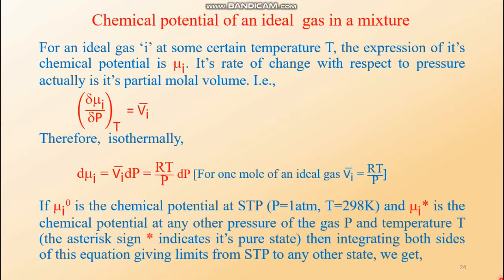Let's start with the expression of chemical potential of a gas at some temperature T and some pressure P, where pressure is variable and temperature is constant. The component is named i, the ith component of the gas. When it is not mixed up with other gases — that means when it is in a pure state — it has a particular chemical potential expressed as mu i. For an ideal gas i at temperature T, its rate of change with respect to pressure is its partial molar volume: del mu by del P at constant temperature equals V̄ᵢ.